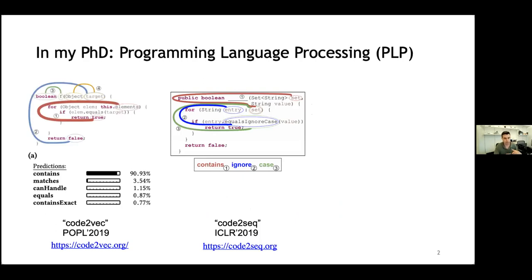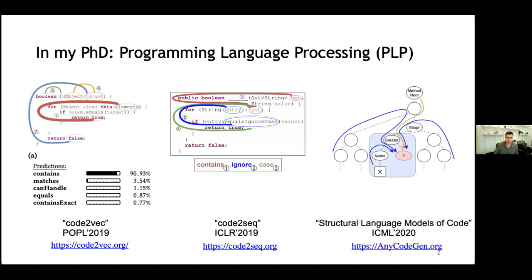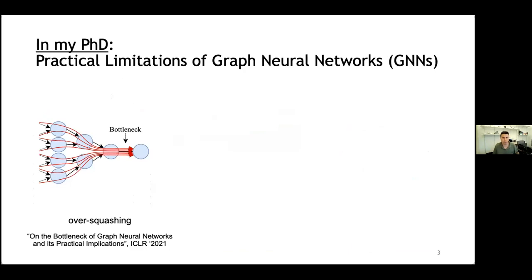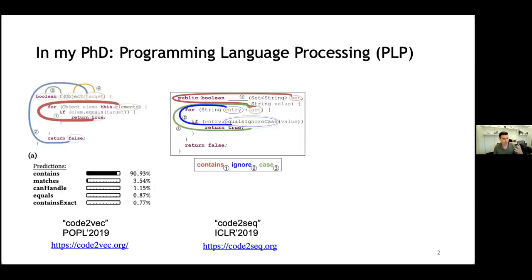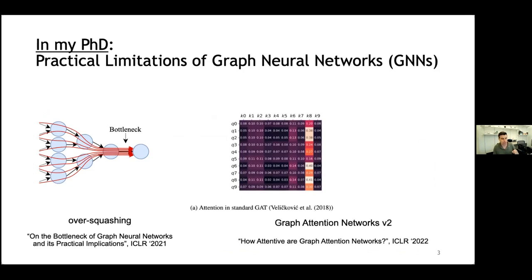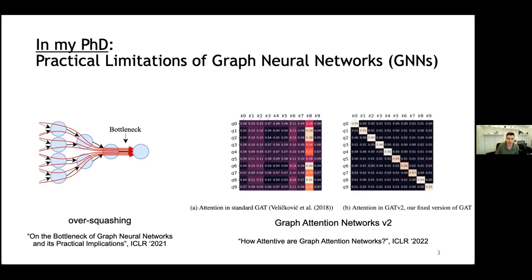In my PhD I did slightly different things. I worked mainly on programming language processing — neural networks that learn source code — for tasks such as generating sequences given code and also code completion. The main idea was to leverage the graphical structure that code has. Code is not only text; I leveraged this syntactic structure into the model's prediction. I also worked on graph neural networks. The paths in programs and graphs from my PhD slightly resemble the work I'm going to present today, even though it's in a completely different field.